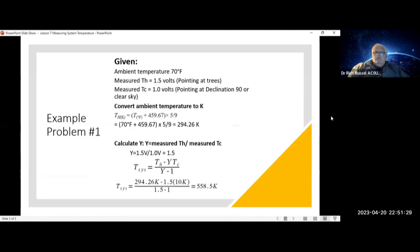Let's go over example problem number one. Given your ambient temperature is 70 degrees, and as you're pointing at the trees to get your T-Hot value, you measure 1.5 volts. If you then point at your T-Cold, which could be declination 90 or any other clear sky, you get 1 volt.